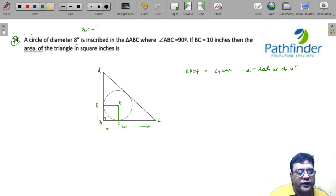So if this is 4 inches, I can write BD to be 4 inches. BF also is 4 inches. And therefore, FC must be 6 inches.